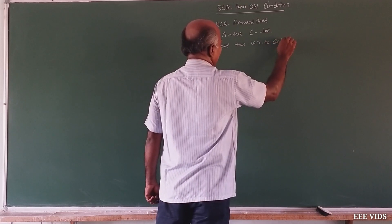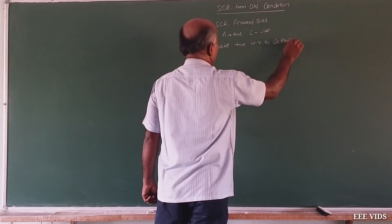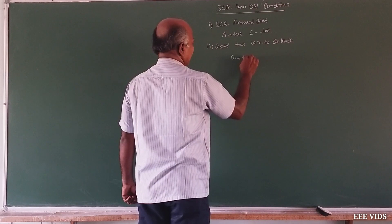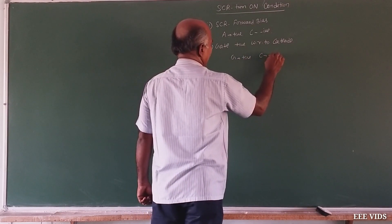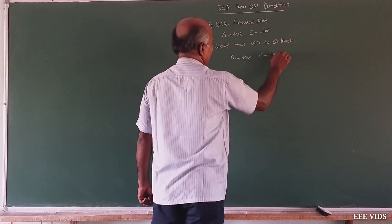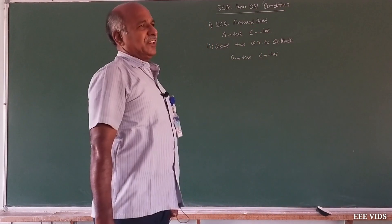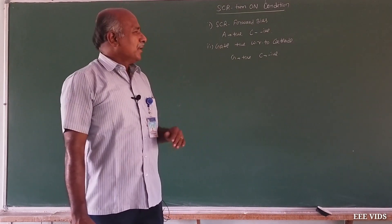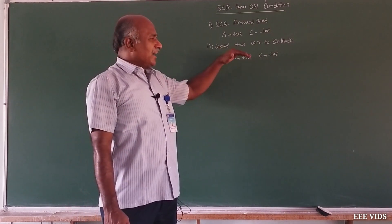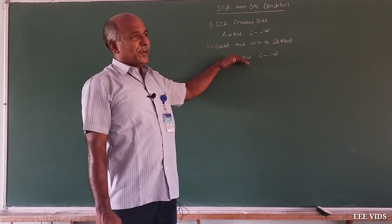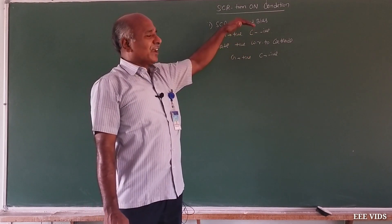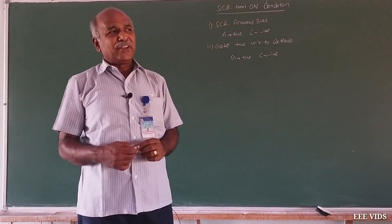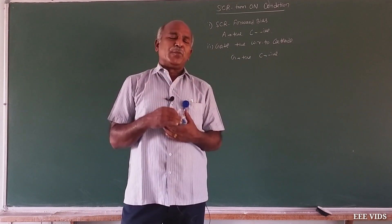Gate positive with respect to cathode, cathode negative with respect to gate. So in this condition, we have one SCR on state to come. In the gate, apply gate current, and the SCR anode to cathode apply voltage — either below the breakover voltage.